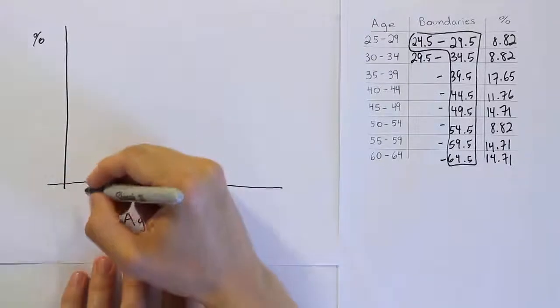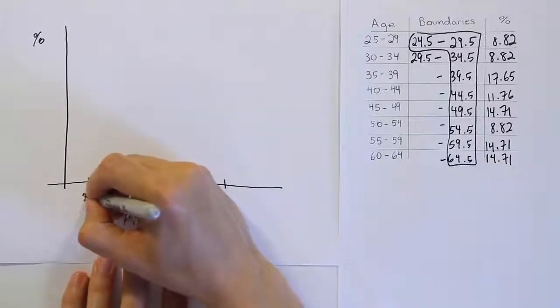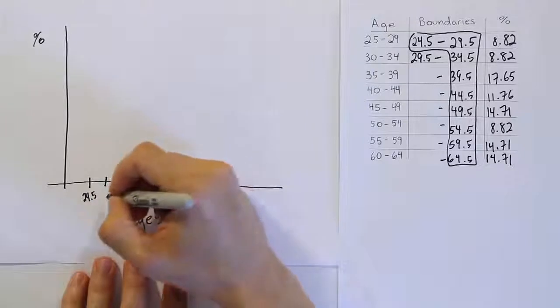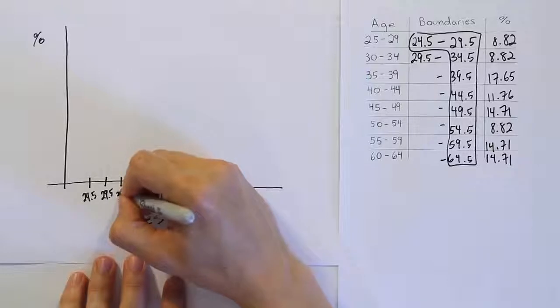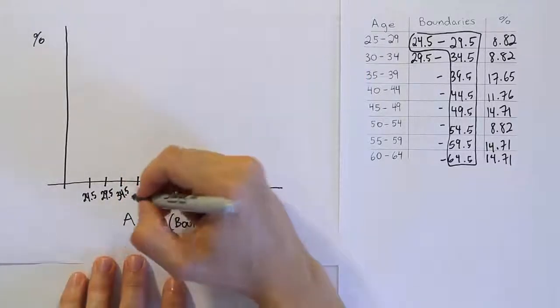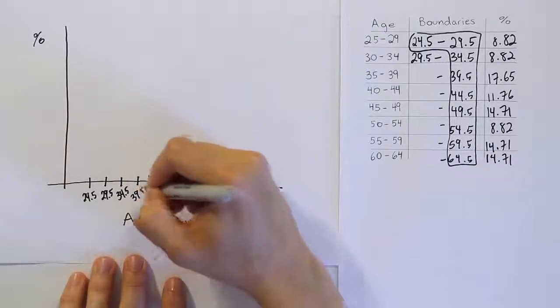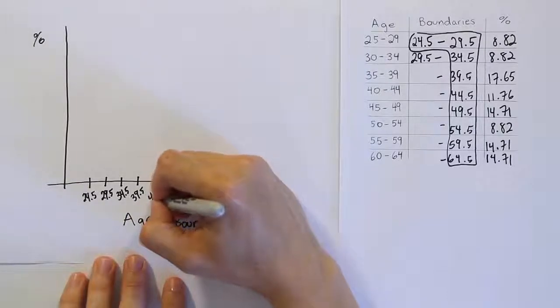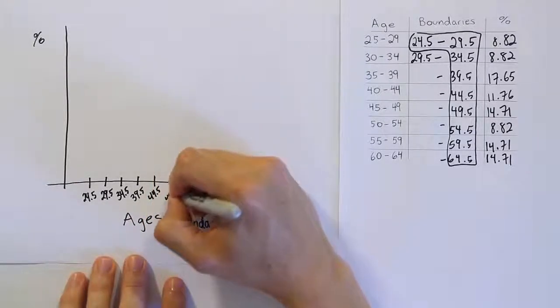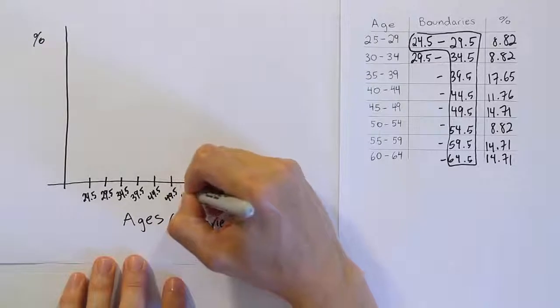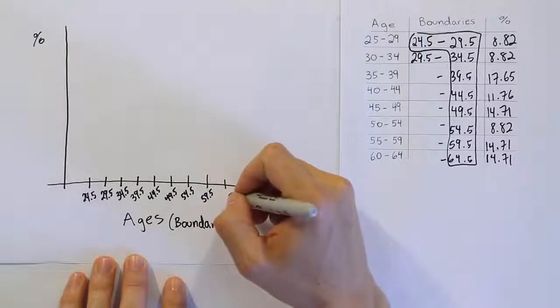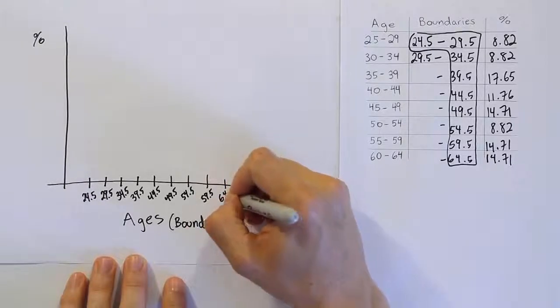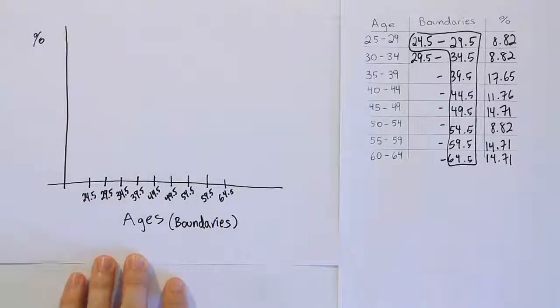I can actually fill in the boundaries - it's 24.5, so 24.5, 29.5. I didn't give myself a lot of room here so I have to kind of squeeze it in - 34.5, 39.5, 44.5, 49.5, 54.5, 59.5, and then finally 64.5. So those are my boundaries. I just place them all on the x-axis in that bottom row.